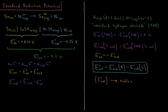The standard EMF of this cell is negative. So if nickel and tin are both at an activity of 1, at a concentration of 1 mole per liter, this reaction would be spontaneous in the reverse direction. A negative EMF means that delta G of reaction is positive, and it is spontaneous in the reverse direction.